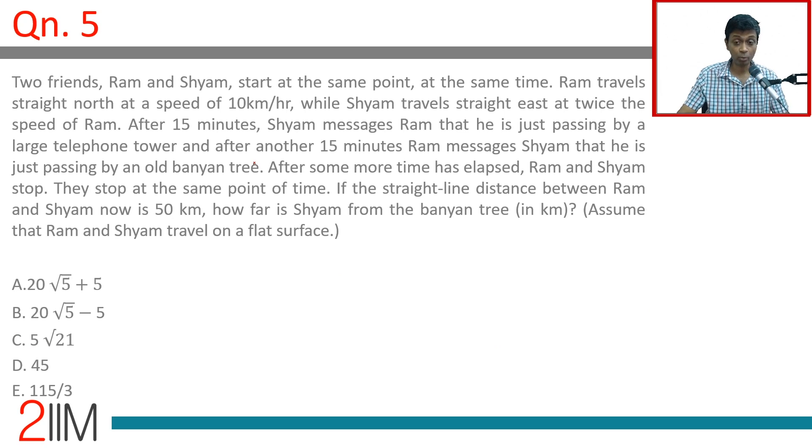Two friends, Ram and Shyam, start at the same point at the same time. Ram travels straight north and Shyam travels straight east at twice the speed of Ram. After 15 minutes, Shyam messages Ram that he is just passing by a large telephone tower.